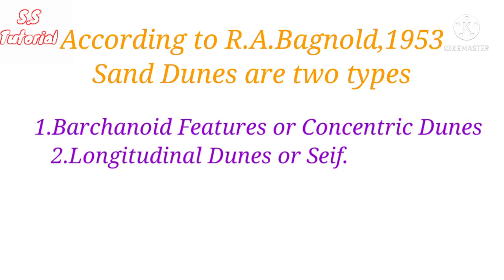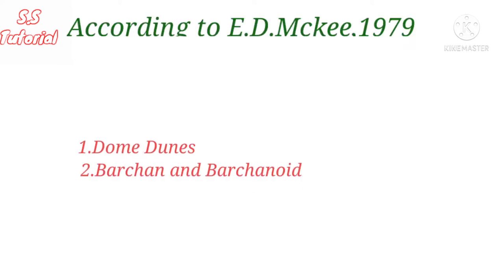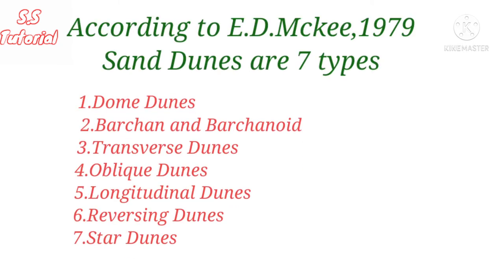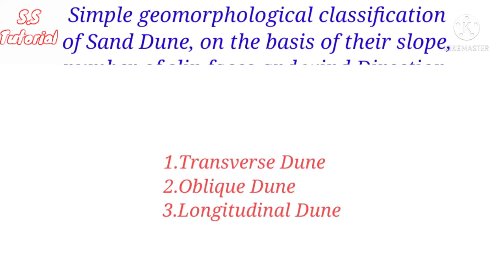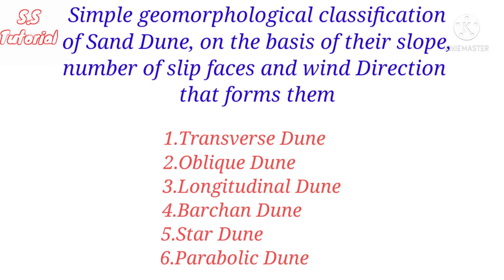According to R.A. Bagnold (1953), sand dunes are two types: barkhanoid features or crescentic dunes, and longitudinal dunes or seif. According to E.D. Mackie (1979), sand dunes are seven types: domed dunes, barkhan, barkhanoid, transverse dunes, parabolic dunes, longitudinal dunes, reversing dunes, and star dunes. A simple geomorphological classification groups dunes on the basis of their shape, number of slip faces, and the wind direction that forms them, resulting in six major groups: transverse dune, oblique dune, longitudinal dune, barkhan, star dune, and parabolic dune.